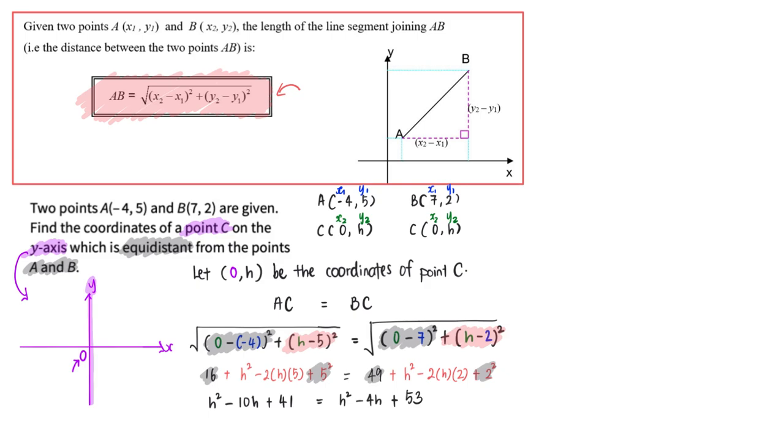I am going to minus h square on both sides so there is no longer h square. I'm going to add 4h on both sides so that my right hand side there's no more h terms. I am also going to minus 41 on both sides.